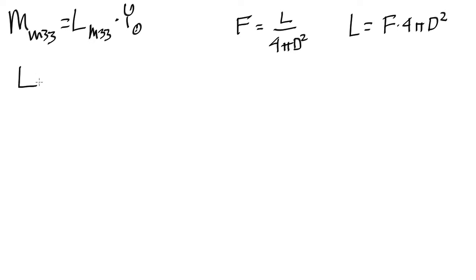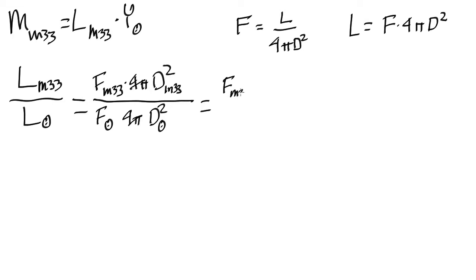What is the luminosity of M33 divided by the luminosity of the sun? Well, from up here, we know we have the flux of M33 times 4π times the distance to M33 squared, and then we do the same thing for the sun. So we have the observed flux of the sun, 4πD, the distance to the sun, squared. And we can cross out those 4π's and simplify this to being the ratio of the fluxes of M33 to the sun and the ratio of the distances of M33 to the sun, squared.